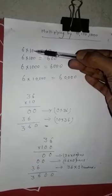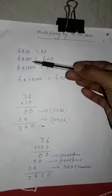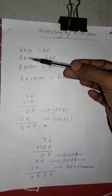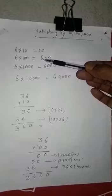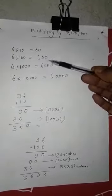You can see here, if we have to multiply with 10, we will put 1 zero on the right. If we have to multiply by 100, we have to put 2 zeros just right to the given number. That is 600.